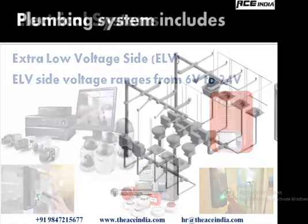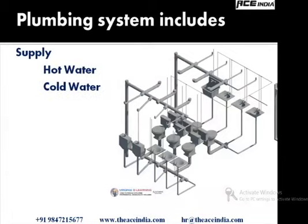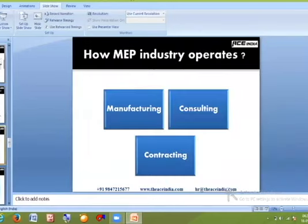Plumbing systems cover good water and bad water — supply and drainage. Supply includes cold water and hot water. Drainage is divided into sullage (wastewater that does not carry human waste) and sewage (soil water that carries human waste). Rainwater and stormwater drainage must also be included. Traps and vents are required to remove foul smell from drainage systems.